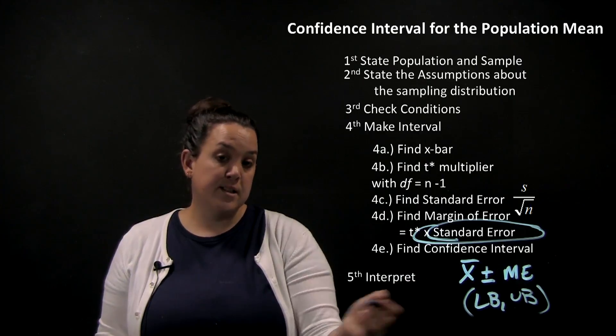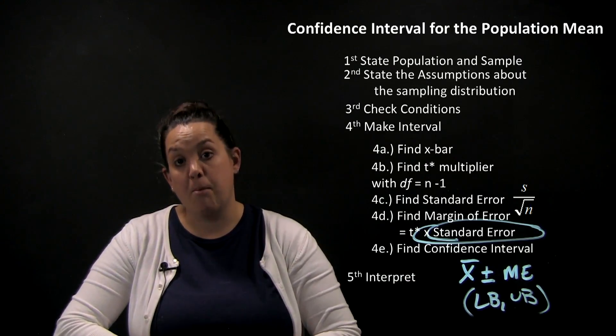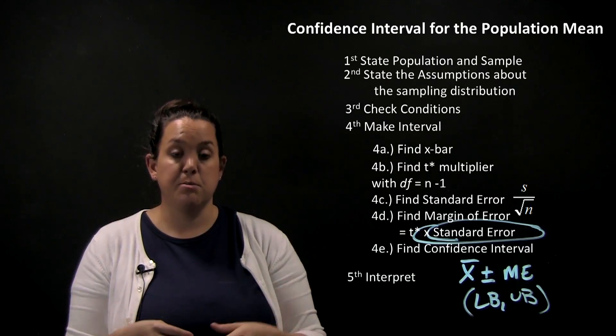After we create that confidence interval, then we'll interpret it and make an inference on our population parameter, which is going to be mu.